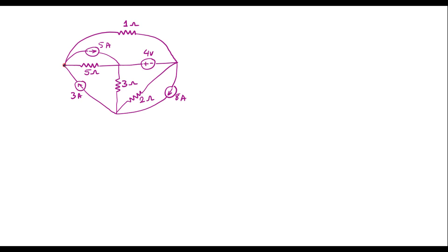This is one node; I will assume the voltage at this node is V1. Here we have another node; I will assume the voltage at this node is V2. And I will assume the voltage at this node is V3. This is the reference node, whose voltage is always 0. We are supposed to find V1, V2, V3 with respect to reference voltage.